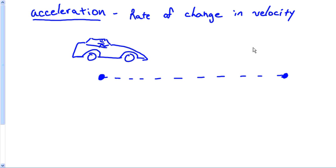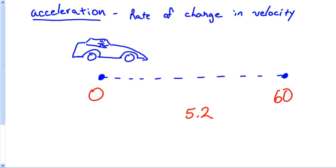Usually when we think about acceleration, we think about that classic example of a car. People will always say, oh, this car can go from 0 to 60 in 5.2. Well, what does it mean when somebody says their car can go from 0 to 60 in 5.2? It tells you how quickly they're able to change speed. And this is all this chapter is about.